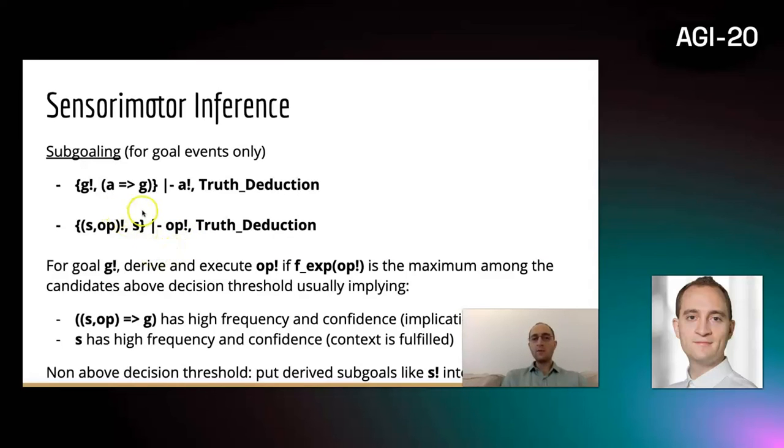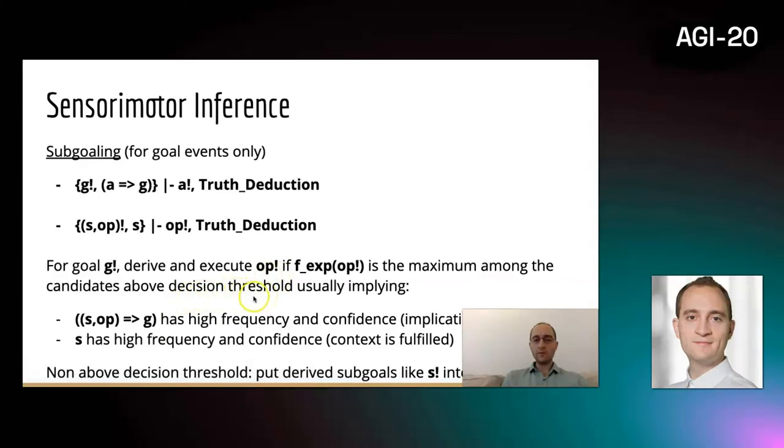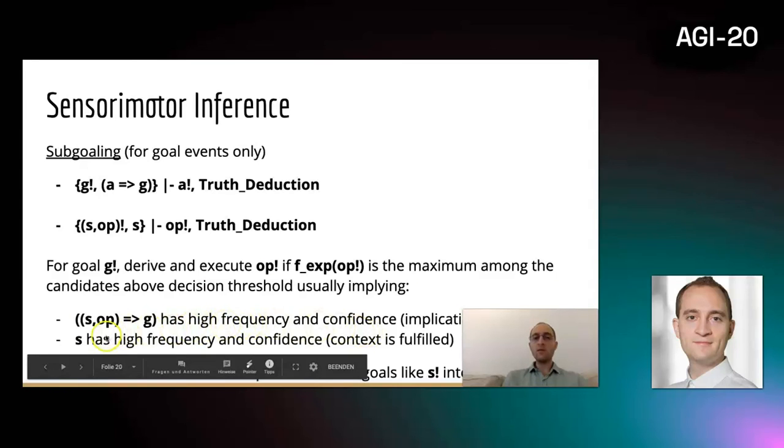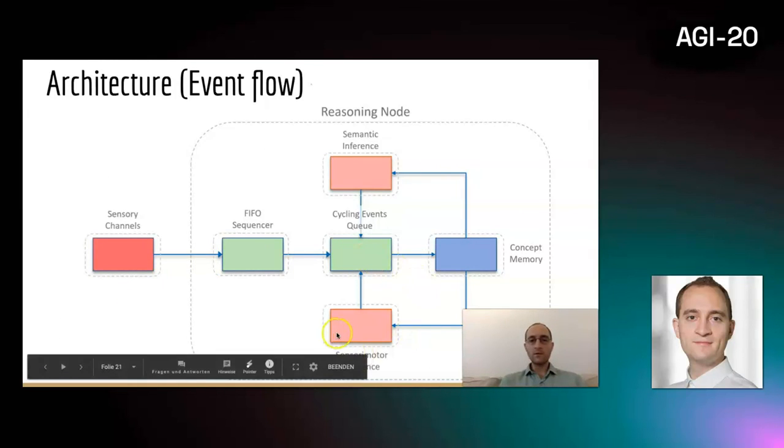Among multiple implication candidates, the system always selects the option for a goal which maximizes the frequency and confidence of the operation goal. For the operation goal to be executed, it needs to be above a decision threshold. The implication needs to have a high truth value, but also the context has to be fulfilled. If there is no operation which is currently above decision threshold, it will simply derive the subgoals, which it will put into cycling events queue, which might in the next step be the new goal to be processed for the system to find operation to execute to realize it.